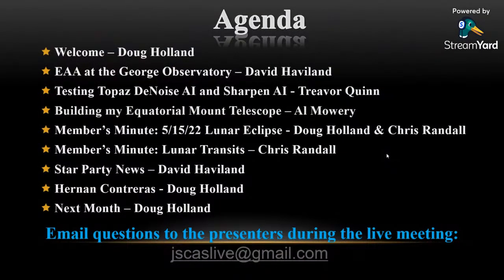Tonight we're going to have a series of short talks, but as we were putting our presentations together, they wound up being a little longer than we expected. Al Mowry, who is going to do Building My Equatorial Mount Telescope, has agreed to be our main speaker next month, so he will not be doing his talk tonight, but you'll be seeing him next month.